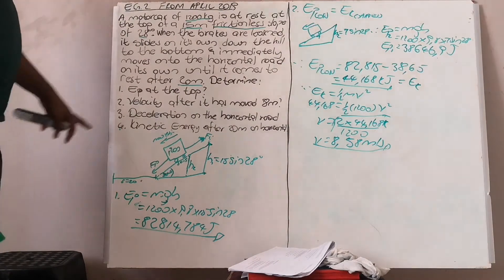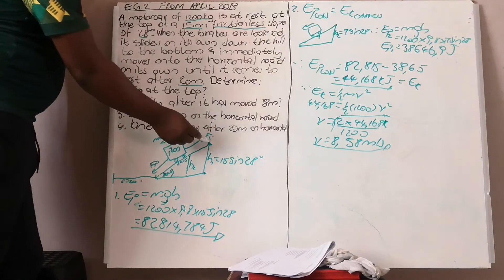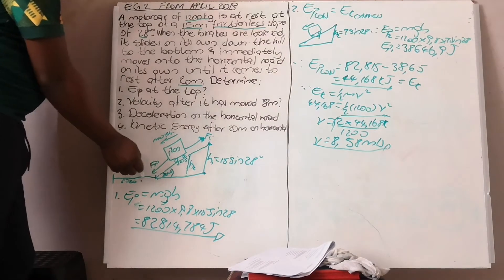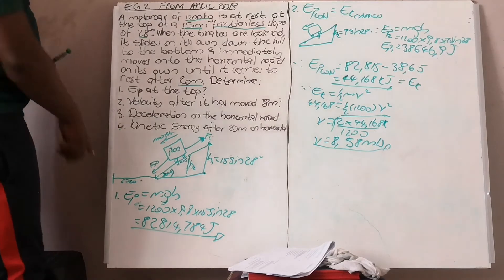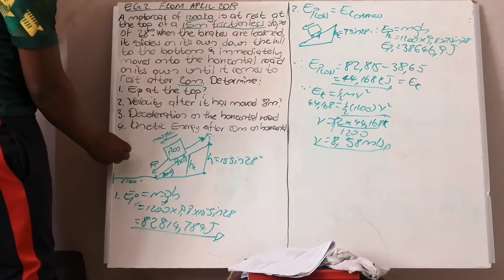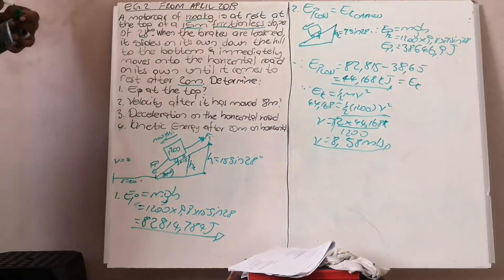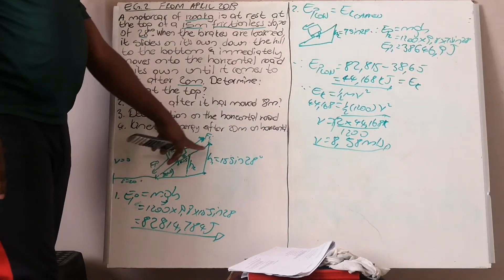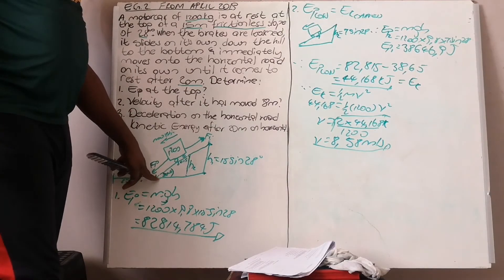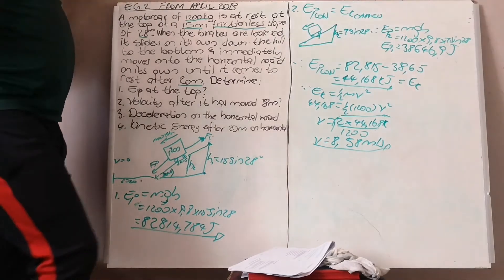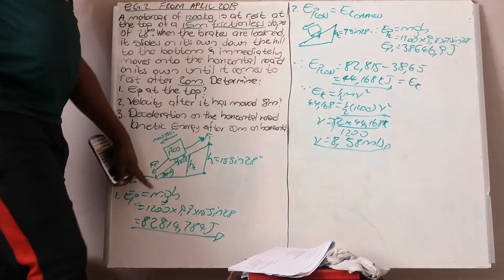Number 3: calculate the deceleration on the horizontal surface. The object has moved from the top of the incline to the bottom and then moves in a straight line horizontally. When moving on the horizontal surface, the final velocity is 0 and the distance moved is 20 meters. The initial velocity for the horizontal surface is the final velocity from the inclined plane — that is, the final velocity at the bottom of the incline.